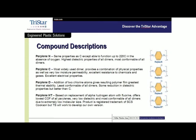The next one is perylene C. Perylene C has a chlorine addition. When they add the chlorine to the perylene backbone, it gives it higher chemical resistance, as well as certain temperature resistance and elasticity.